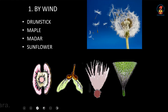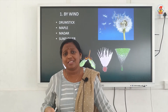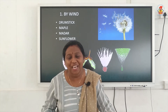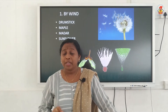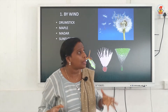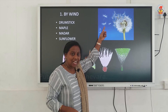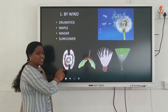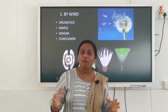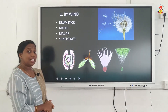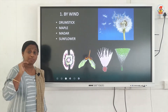The first agent is wind. If a seed has to be taken away by wind, it should be very lightweight — a coconut seed can never be taken away by wind. The seed should be very small and lightweight. Some seeds have hair-like structures on them so they can be easily carried away by wind. Other seeds have wing-like structures. Using these structures, seeds can be easily taken away by wind.